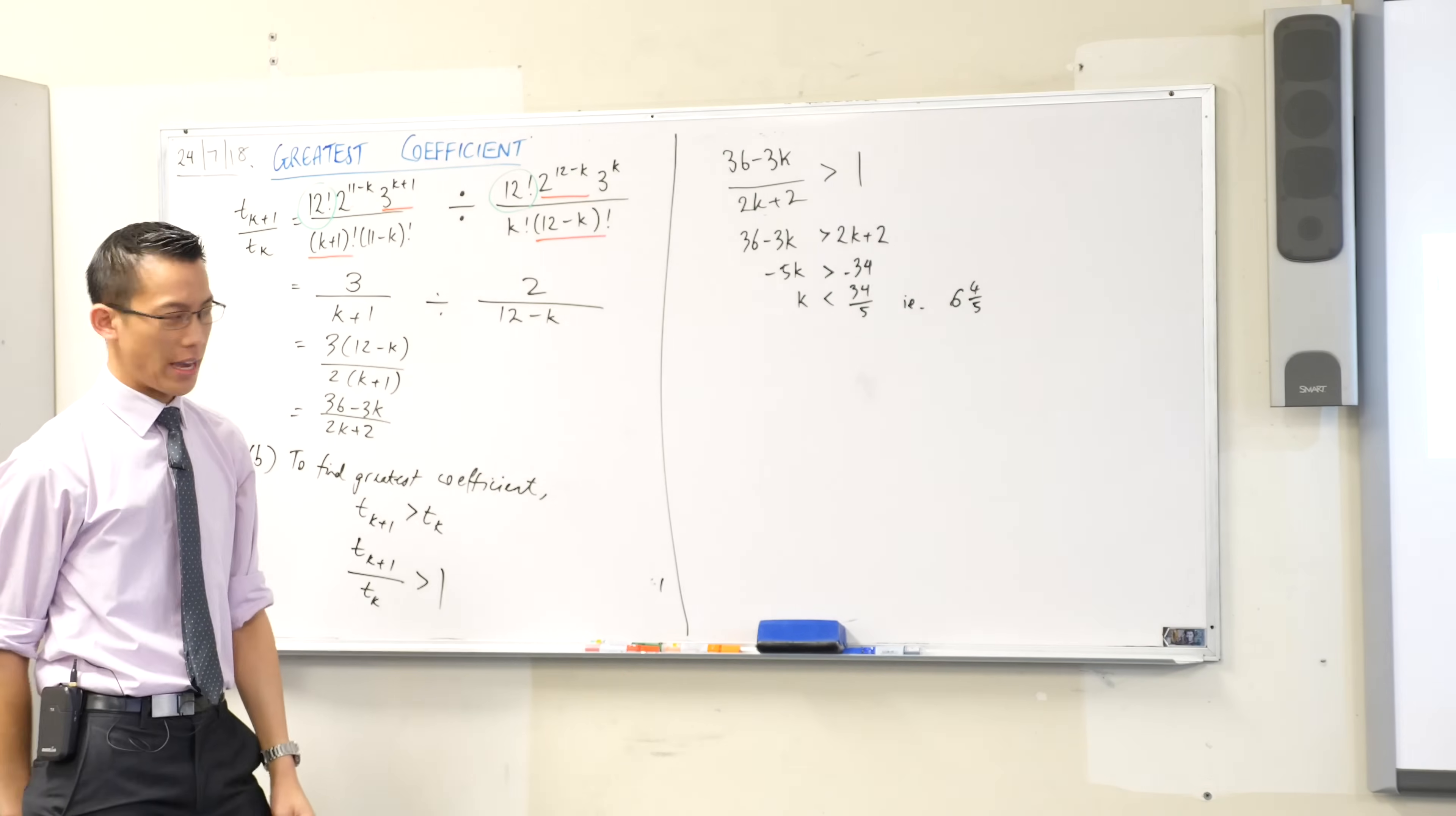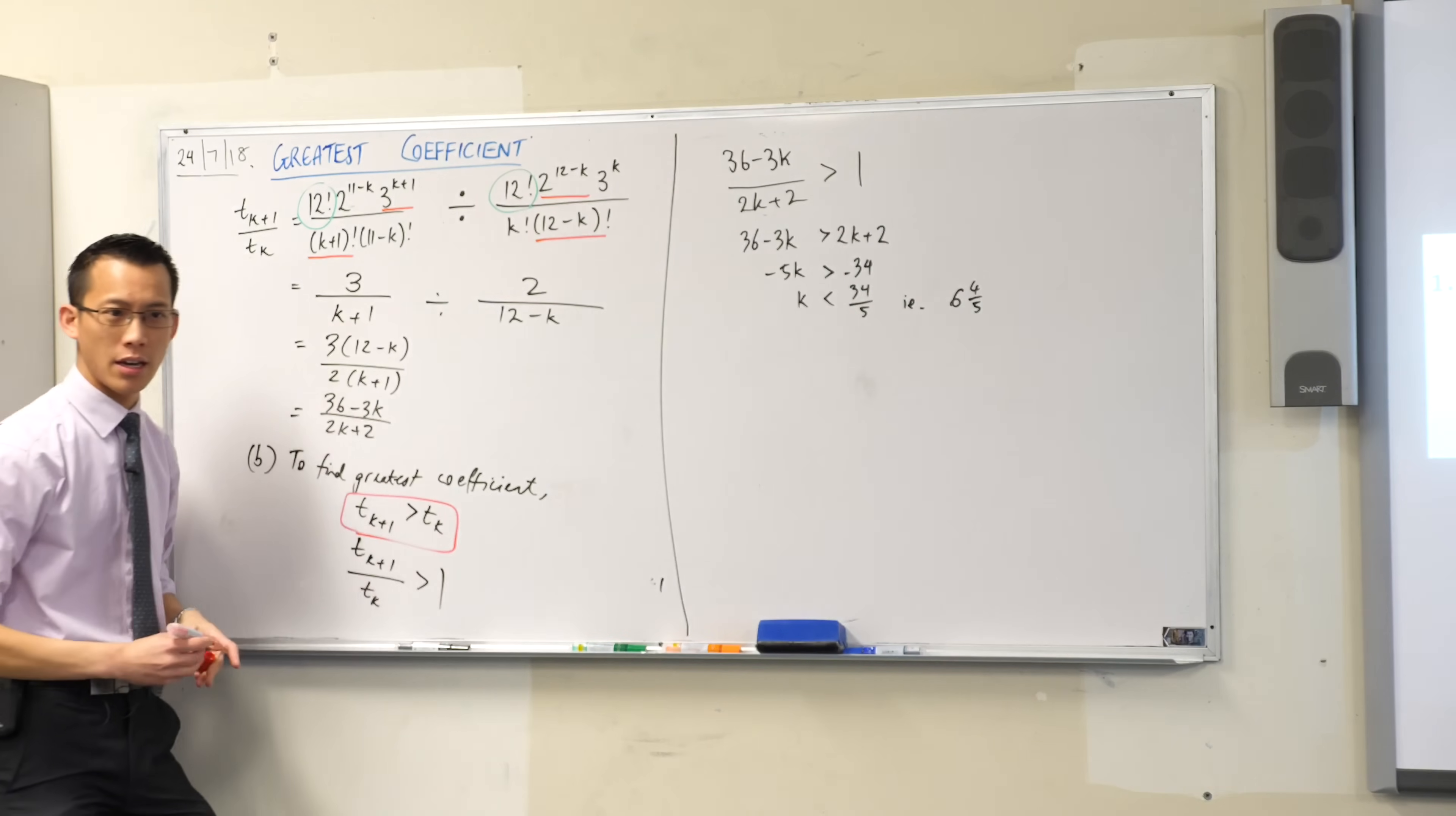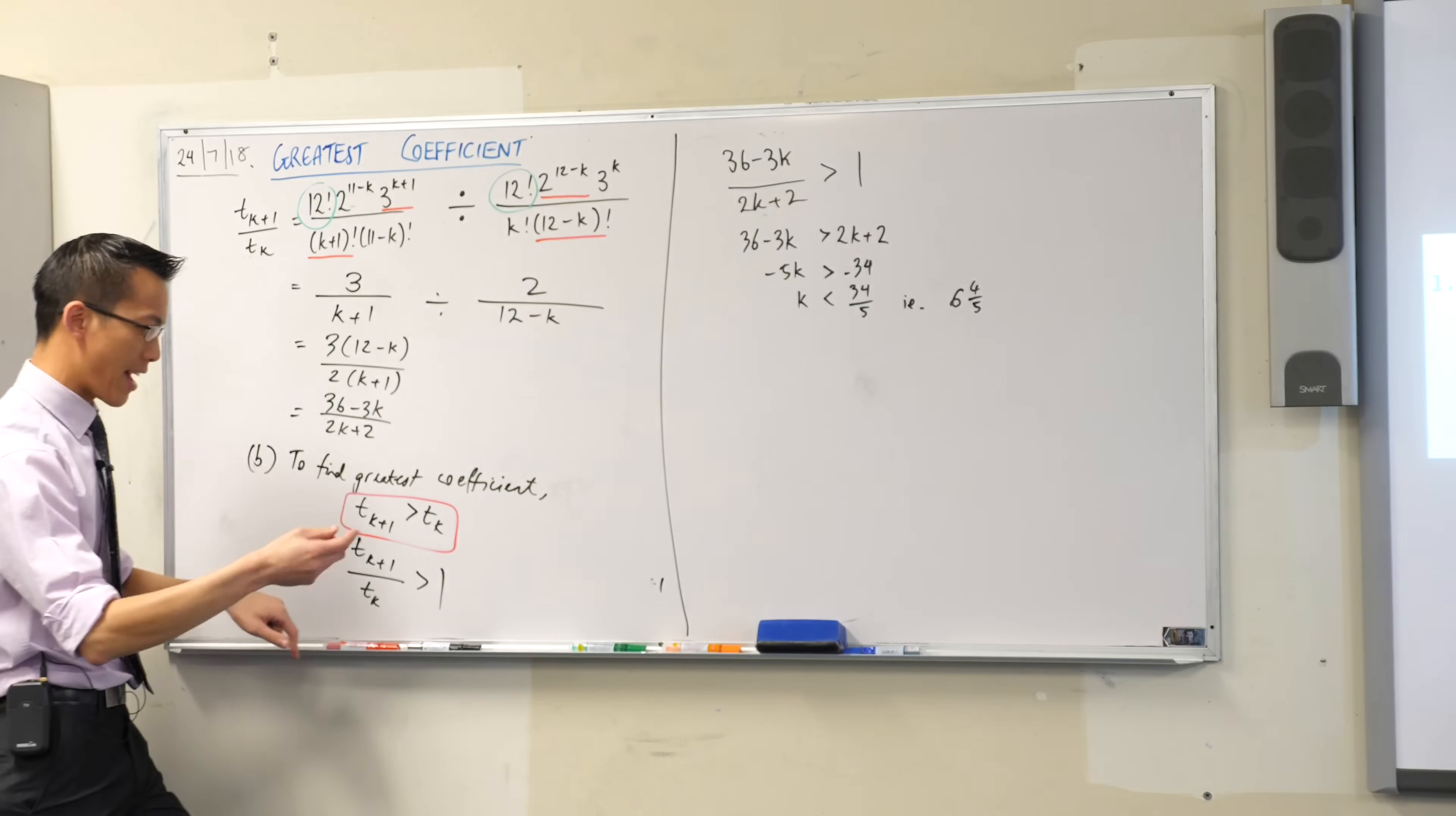Now what was the point of saying this? Well, k has to be less than 6 and 4 fifths for what? For this to be true over here. So remembering that k is an integer, 0, 1, 2, 3, 4, etc. all the way up to 12. Okay, I can say, therefore,